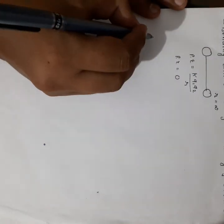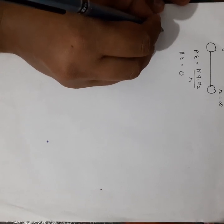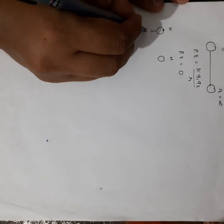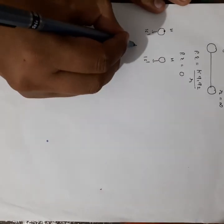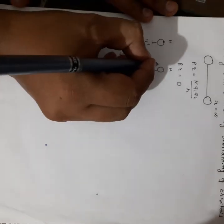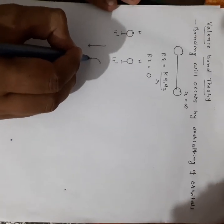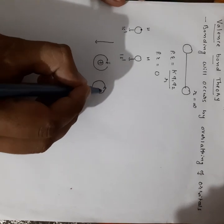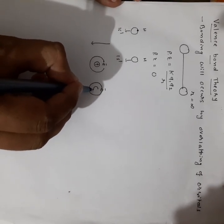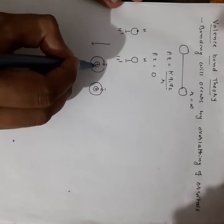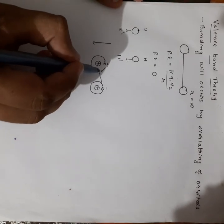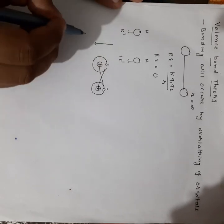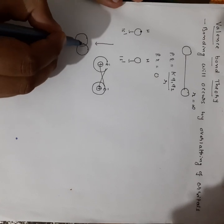To understand this overlapping, we will consider the bonding in the H2 molecule. Here we have one hydrogen atom and another hydrogen atom. As we know, hydrogen has only one orbital, which is 1s1. If these two atoms are at some distance and we decrease that distance, the nucleus of one atom will attract the electron of the other atom's orbital, and vice versa. So as the distance decreases, they will come to a certain distance where the orbitals can overlap.